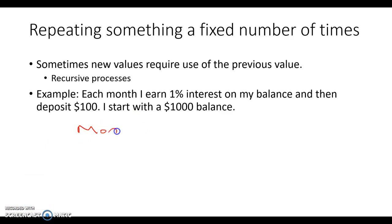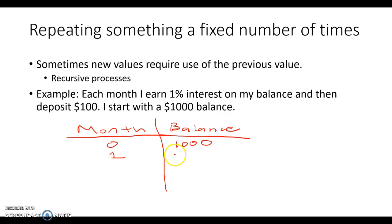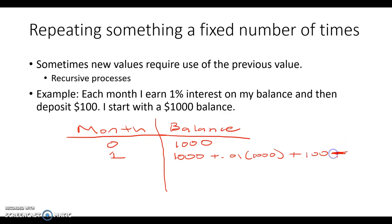I'll start here with month versus balance. At month zero, I have a $1,000 balance. At month one, I'm going to have the $1,000 plus 1% earned on the $1,000, plus my $100 deposit, which comes out to $1,010 plus $100, giving me $1,110.